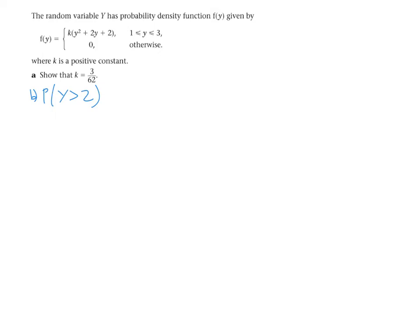But getting back to part A, of course, remember that the area under a probability density curve is equal to 1. So we know that the area underneath this curve here, this line, is 1. So in order to solve part A, we need to integrate that function and make it equate to 1.